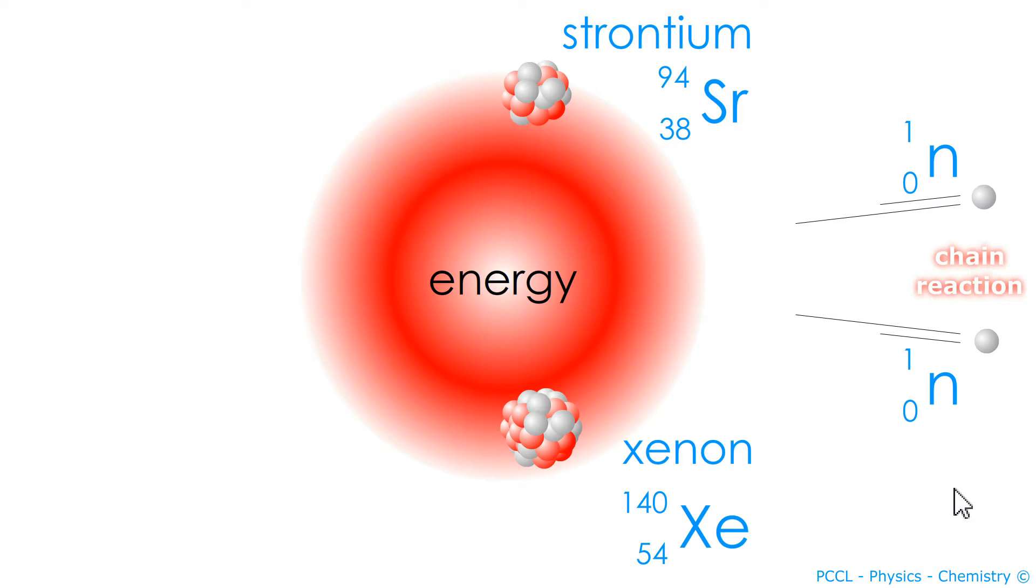In fact, on average, it is 2.5 but as half neutrons do not exist it will be two or three. Each neutron, in turn, will interact with a uranium nucleus. This is called a chain reaction.